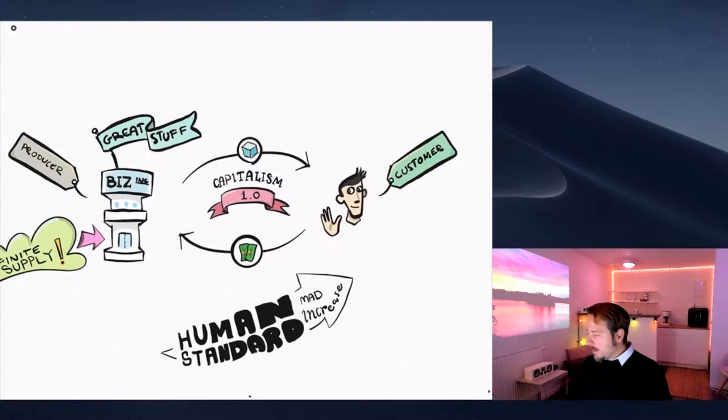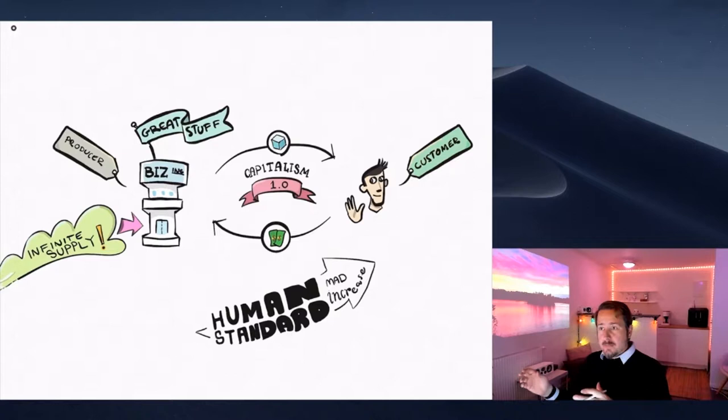Basically, what we have is we have a way to have supply and demand. And if the demand isn't there, the supply changes. It's very adaptive. It's very smart and it makes for booming businesses. So capitalism has been really awesome and it's made the human standard soar to the skies.